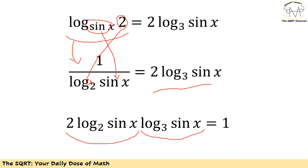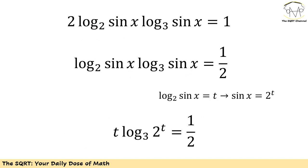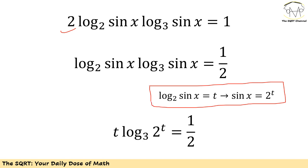Now I divide both sides by 2, then replace log of sine x in base 2 with a new variable t. So 2 to the power of t equals sine of x. We then have: t times log of 2 to the power of t in base 3 equals 1 over 2. Here t is the unknown variable and everything else is known.